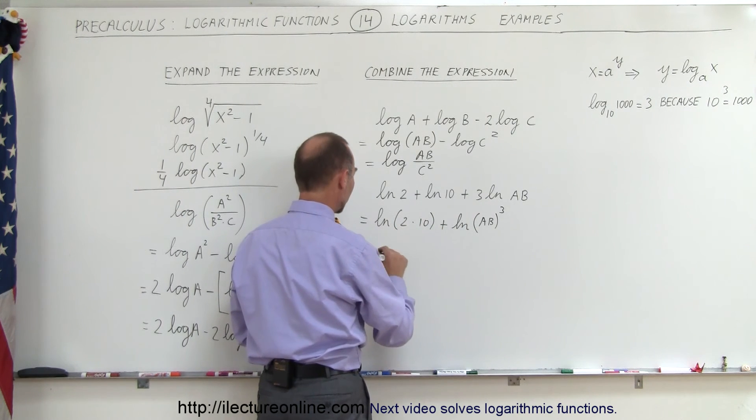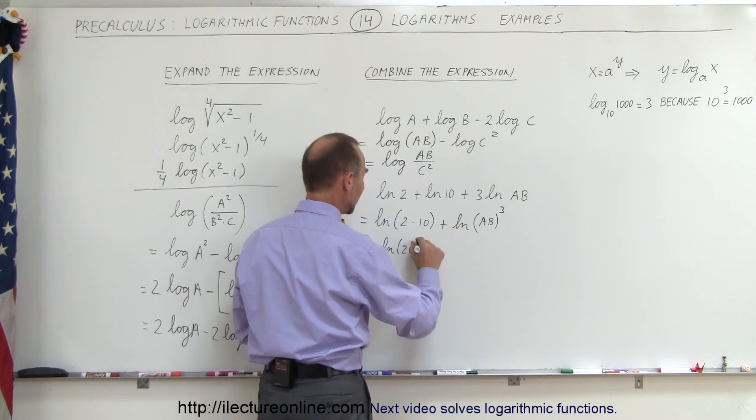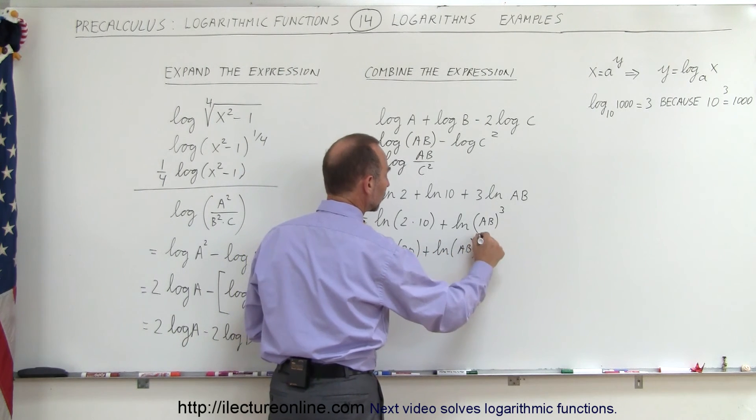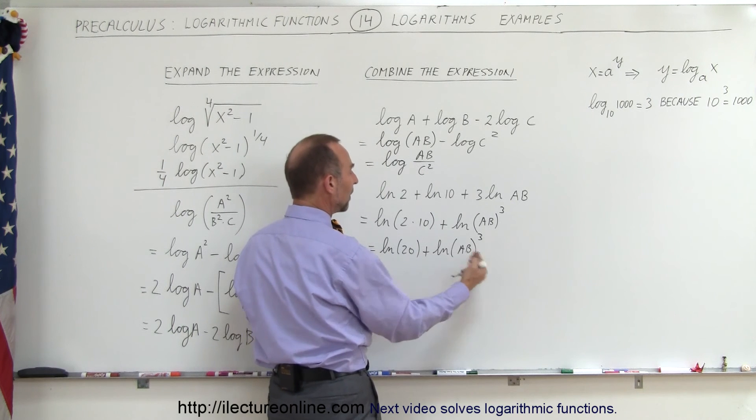This is the natural log of two times ten, which is equal to the natural log of twenty, plus the natural log of a times b, quantity to the third power, and then we can combine this even further.